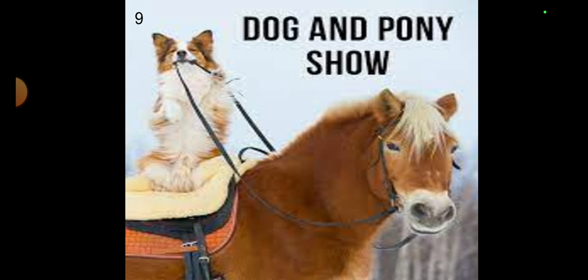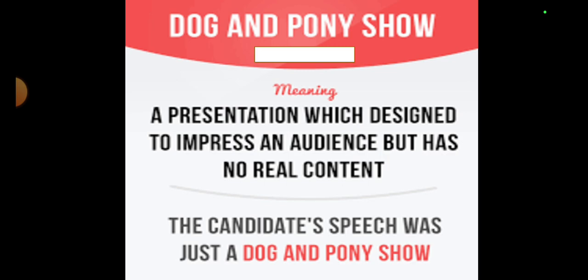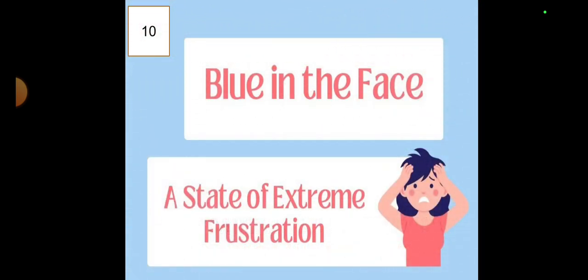Number nine is dog and pony show. What does it mean viewers? A presentation which is designed to impress an audience but has no real content. Means the things are quite pretentious, snobbish, and like show off, but in fact they do not have any worth or value, you can say, inside them. For example, the sentence: the candidate's speech was just a dog and pony show.